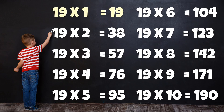Table of 19: 19 times 1 is 19, 19 times 2 is 38, 19 times 3 is 57, 19 times 4 is 76, 19 times 5 is 95, 19 times 6 is 114, 19 times 7 is 133, 19 times 8 is 152, 19 times 9 is 171, 19 times 10 is 190.